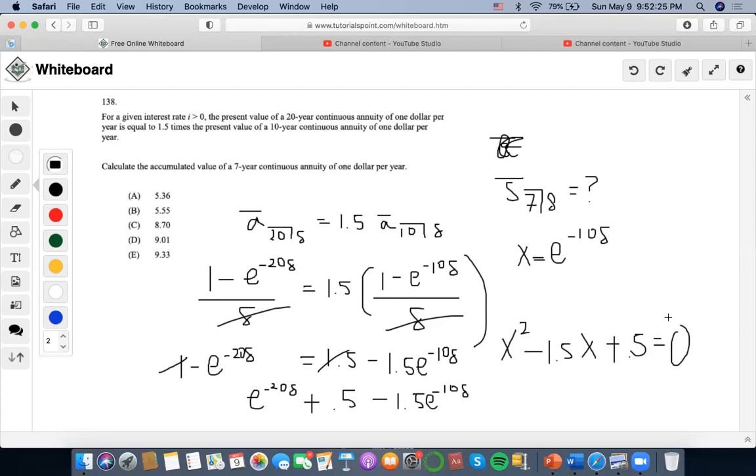Now we can use the quadratic equation. So I can set this as negative 1.5 plus or minus the square root of b squared minus 4ac over 2a.